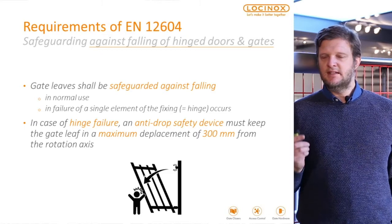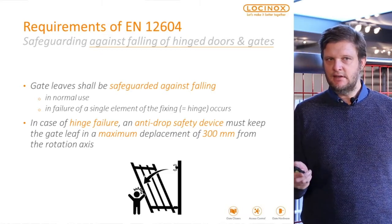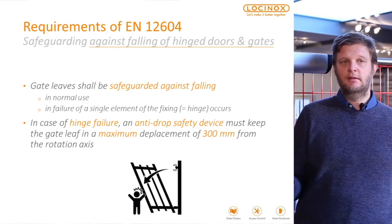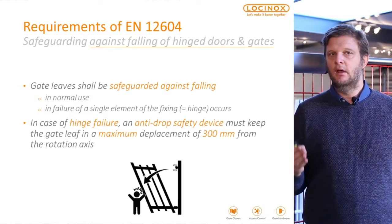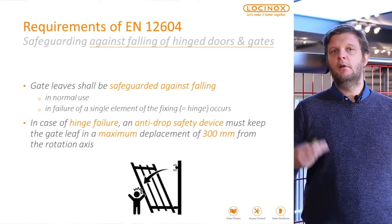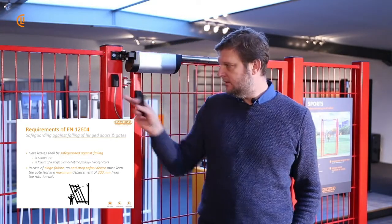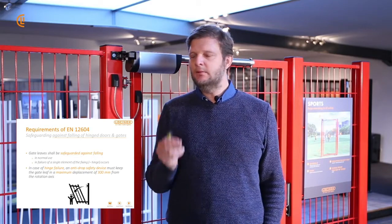The requirement: safeguarding against falling of hinge doors and gates. The gate leaves shall be safeguarded against falling in normal use and also in failure of a single element of the fixing — referring of course to the hinge. In case of a hinge failure, an anti-drop safety device must keep the gate within a maximum displacement of 300 mm from the rotation axis.